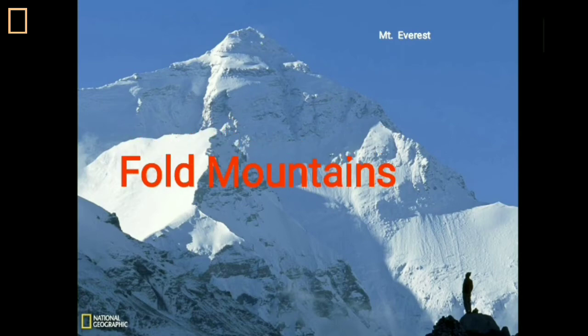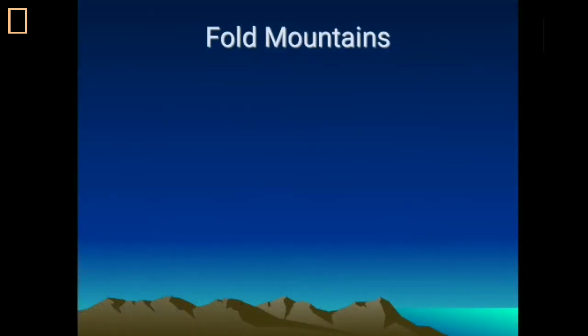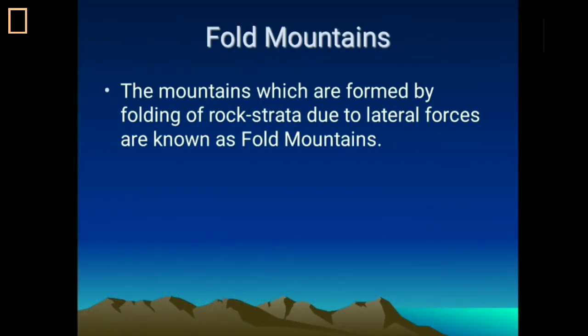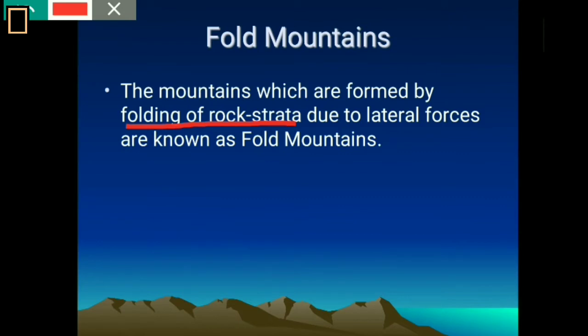Among the fold mountains, the most important is the Himalaya because Mount Everest is situated there. These fold mountains differ from one another based on the nature of folding of the rock layers. The mountains which are formed by the folding of the rock strata are known as fold mountains — the energy always comes from lateral forces. The rock strata are folded in different directions, with energy coming from either or both sides.